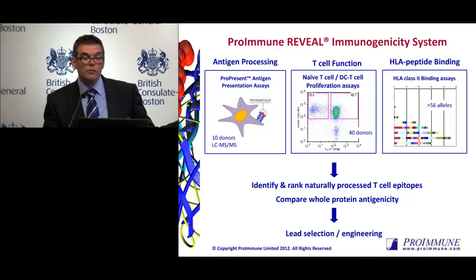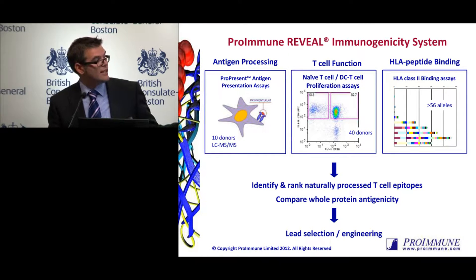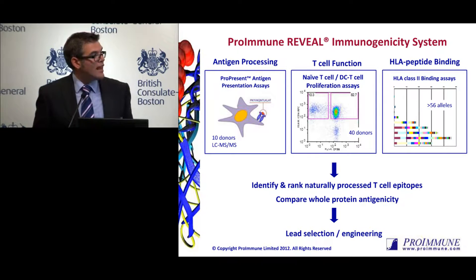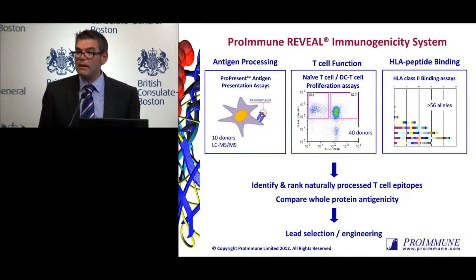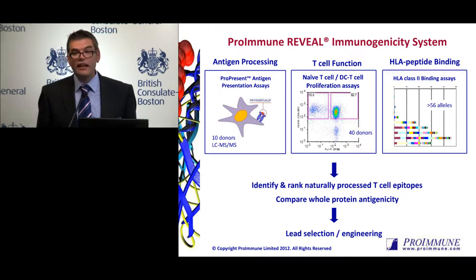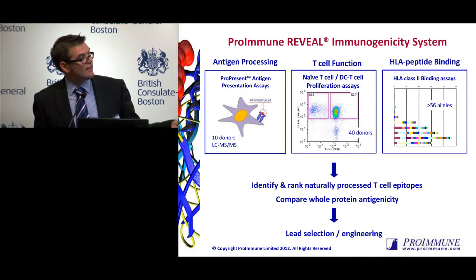First, I'm going to be talking about our antigen processing assays, which we call ProPresent. These are assays where we use dendritic cells loaded with a therapeutic of interest, and we then identify peptides that are naturally processed and presented in the context of MHC molecules. This takes into account antigen processing questions and post-translational modifications. Anything that changes the mass of the peptide sequence could be picked up by mass spectrometry. T-cell functional assays, such as our naive T-cell PBMC assays using overlapping peptides to assess proliferation, or whole protein dendritic cell T-cell assays, are very useful in understanding the ultimate functional response of those peptide sequences.